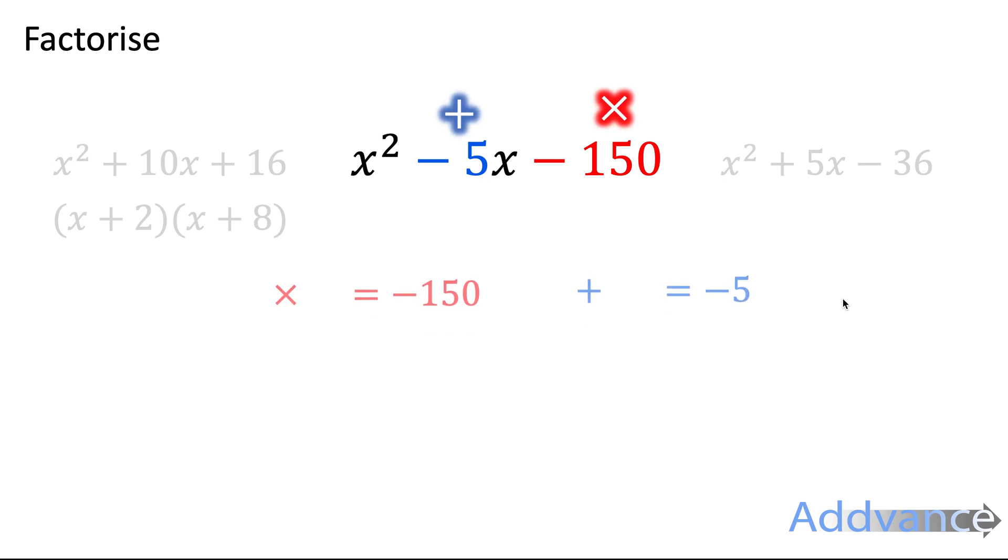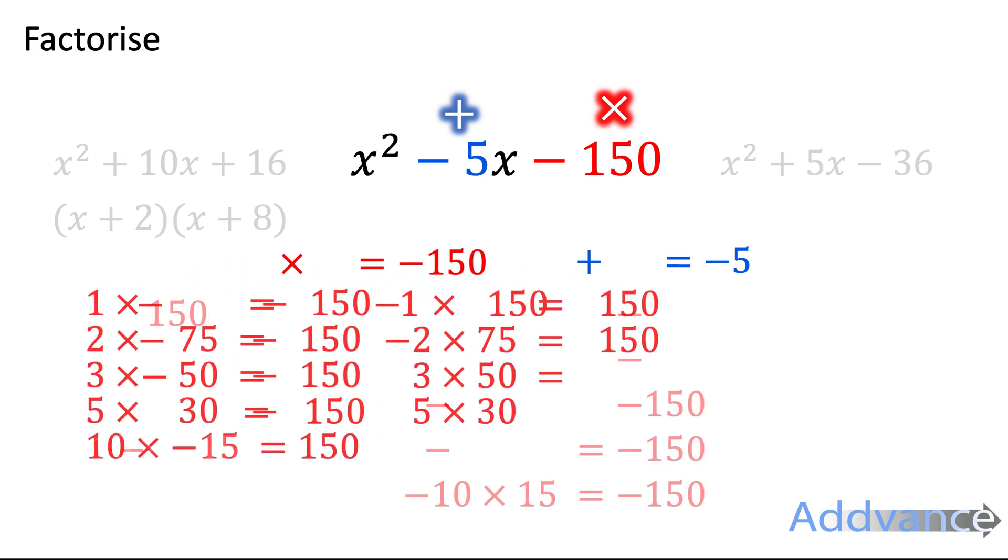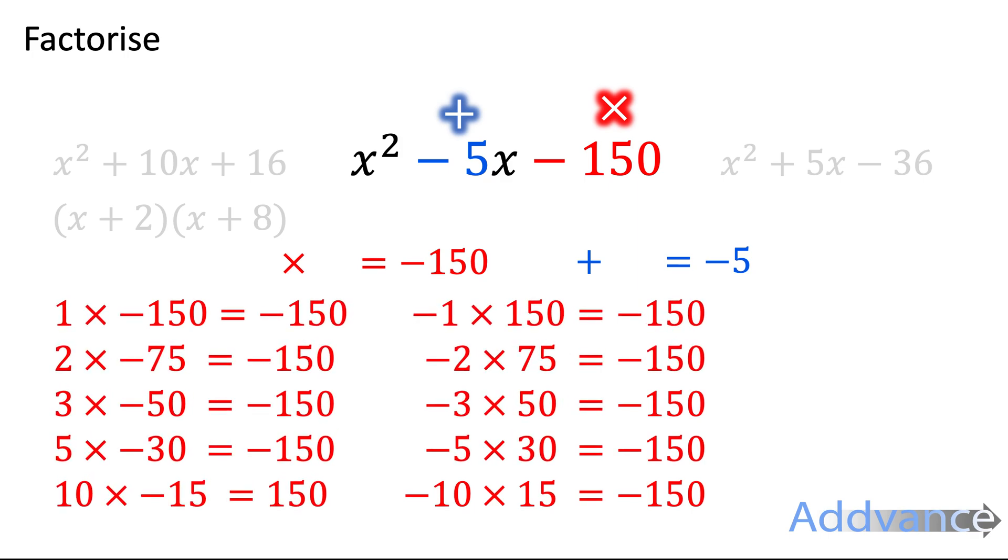Okay, we're looking to add to make minus 5, and multiply to make minus 150. So we look at all the pairs that multiply to make minus 150. So you've got 1 times minus 150, minus 1 times 150, etc. And you're finding all the pairs, and one of those pairs adds to make minus 5.